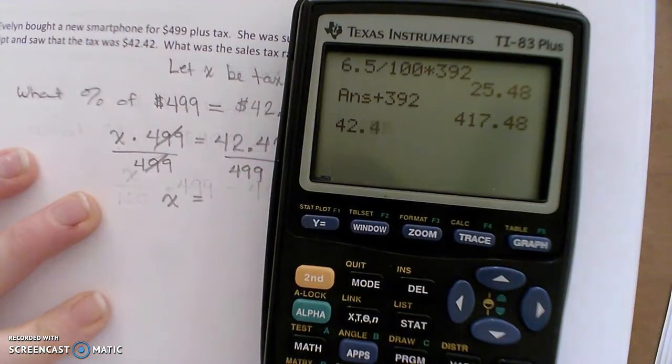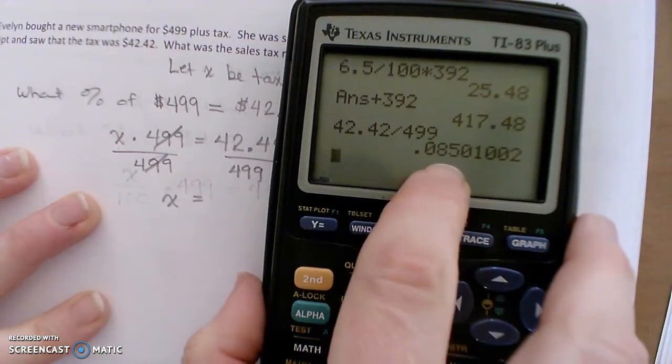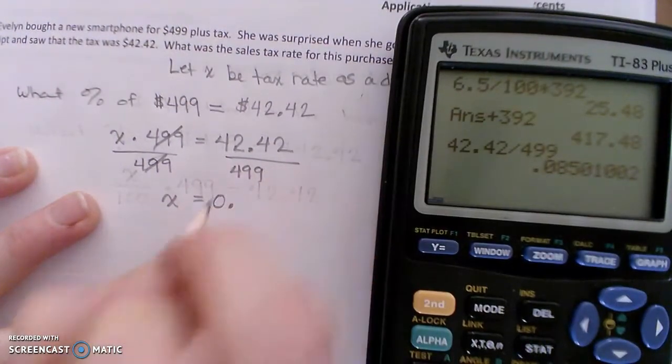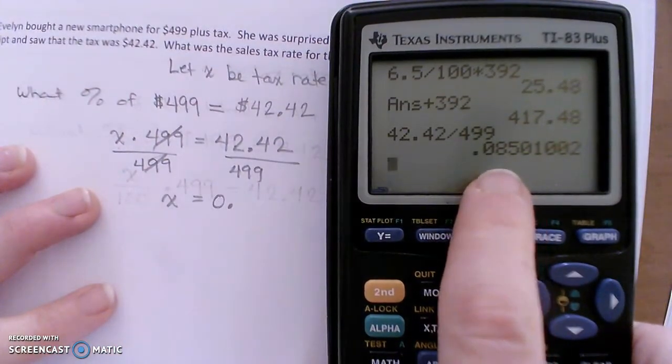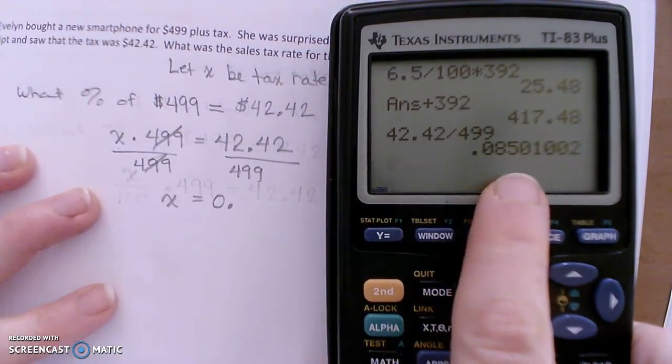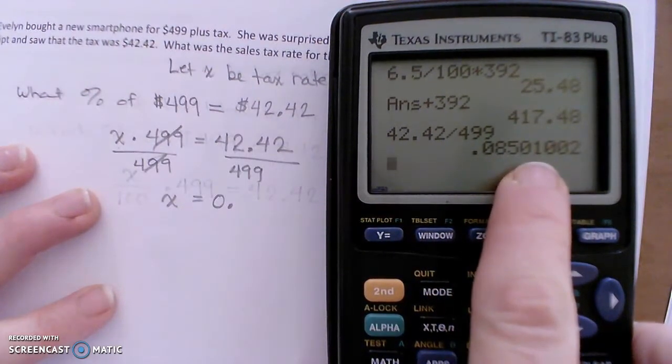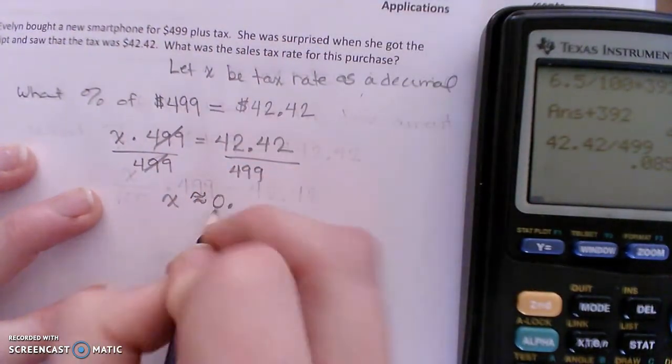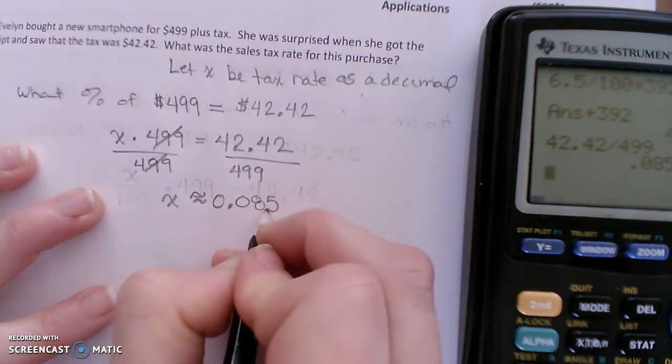Say $42.42 divided by $499 gives me 0.0... Let's say we'll give three places after the decimal here. So 0.085, look at the next place. It's a zero, so that leaves the five alone. So it's approximately 0.085. So this is the rate as a decimal.